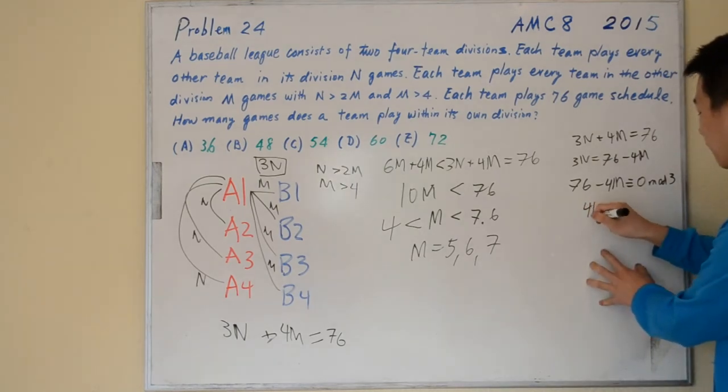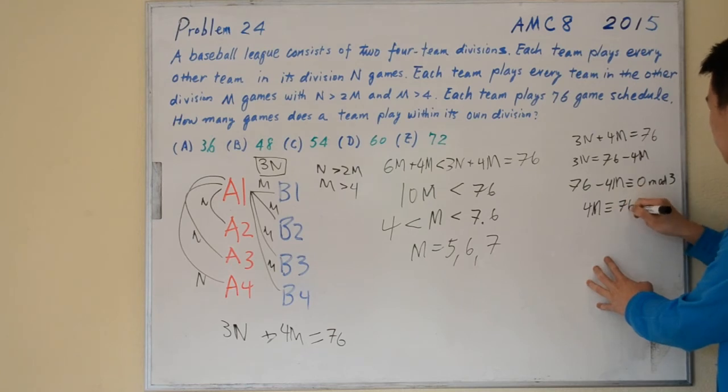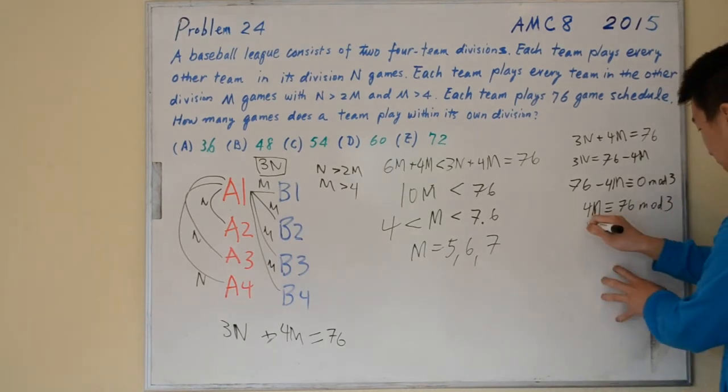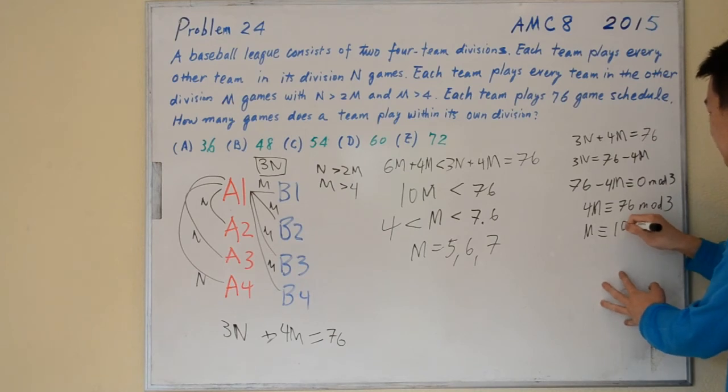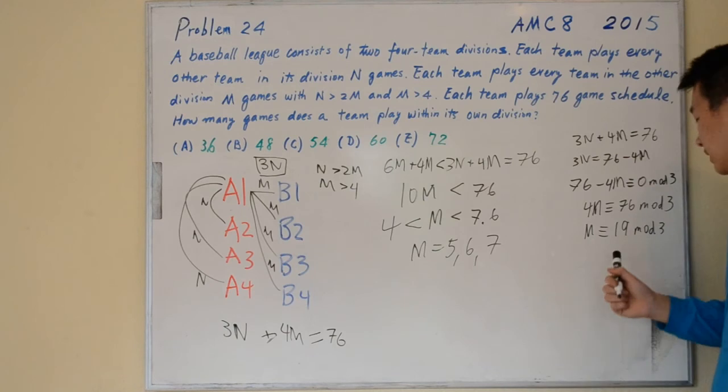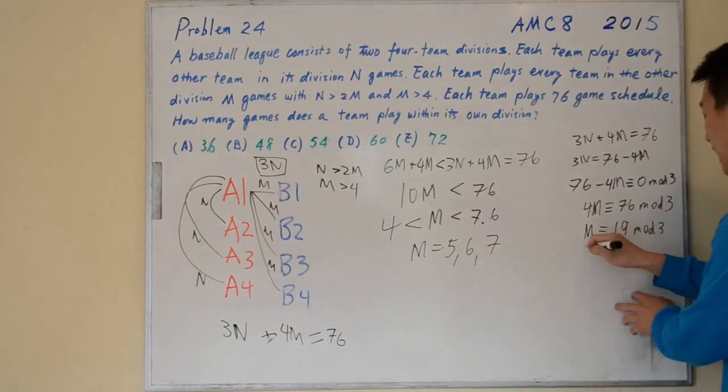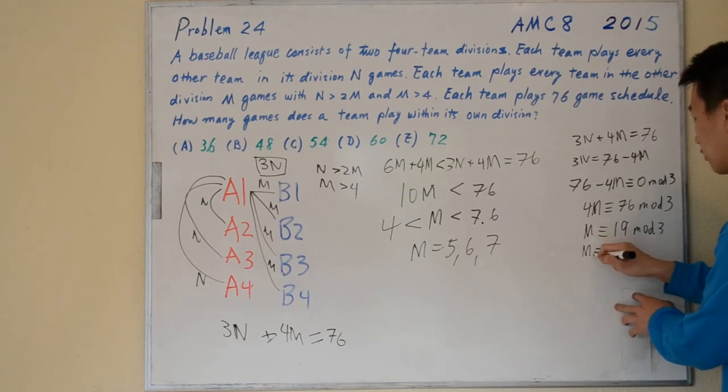We can divide both sides by 4, so M is congruent to 19 mod 3. 19 is 18 plus 1, and 18 is a multiple of 3, so we know that M is congruent to 1 mod 3.